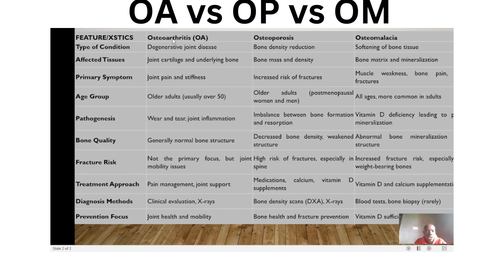Looking at the affected tissues: in osteoarthritis, the joint cartilage and underlying bone are affected. In osteoporosis, we have the bone mass and density affected. In osteomalacia, the bone matrix and mineralization are affected.